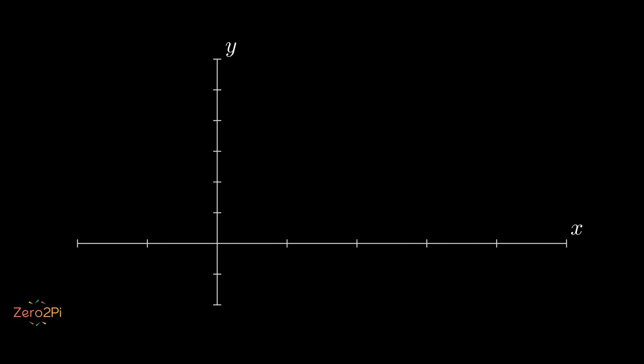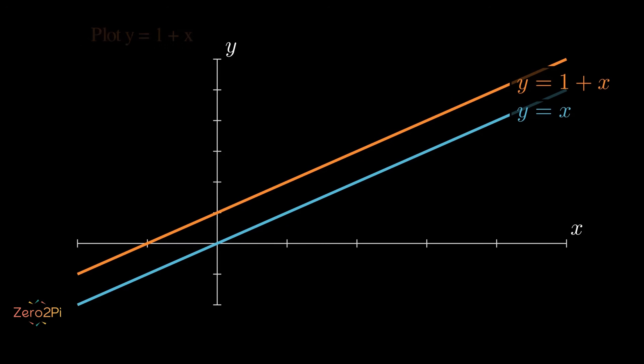Let's look at this graphically. If we plot y equals x, we get a straight line. If we plot y equals 1 plus x, we get another line. These are two parallel lines with a constant vertical separation of 1.